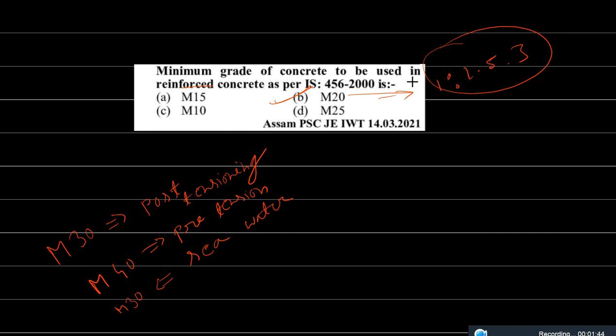This is an important question. Earlier, as per IS-456-1978, the minimum grade of concrete was M15. After that, IS-456-2000 upgraded the grade to M20. So that is an upgrade. Also remember: M30 is the minimum grade for post-tensioning concrete, M40 is for pre-tensioning concrete, and M30 is for seawater conditions. Make a mnemonic to remember these values.